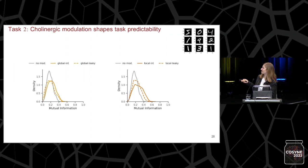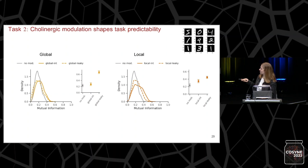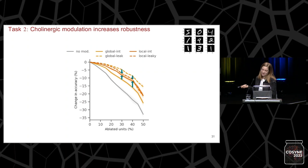In terms of mutual information, the landscape is reversed — networks without any modulation now have lower mutual information in their units. However, similarly to before, adaptive modulation produces networks with a slightly wider distribution, still suggesting they encode task variables in a more diversified way. In terms of sparsity, it is also similar to before — networks without any modulation are less sparse. In the ablation experiment, adaptive methods are again more robust to cell death than networks without modulation. Under local modulation, there is a slight improvement for the perfect integrator, whereas the leaky integrator actually becomes slightly worse.